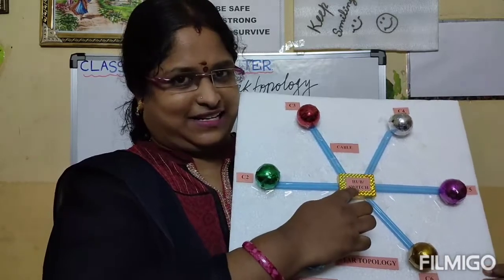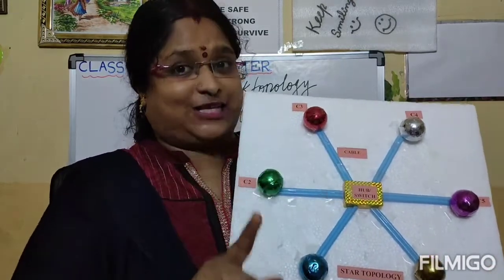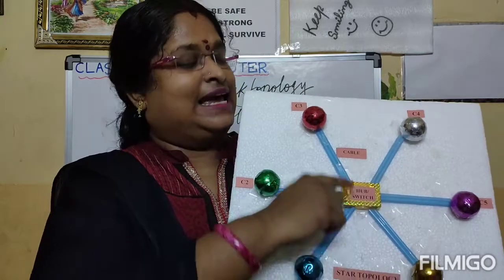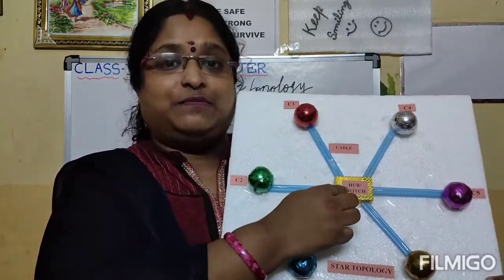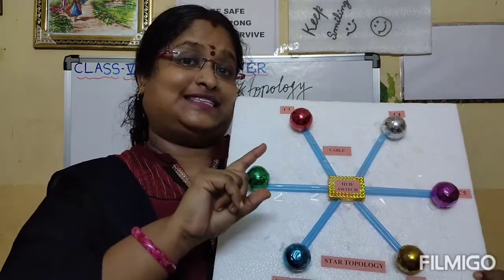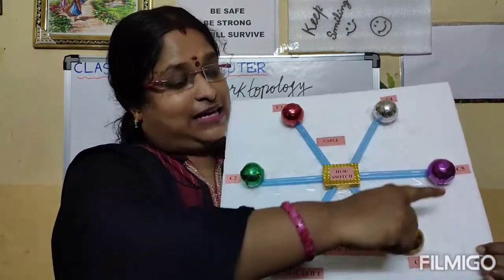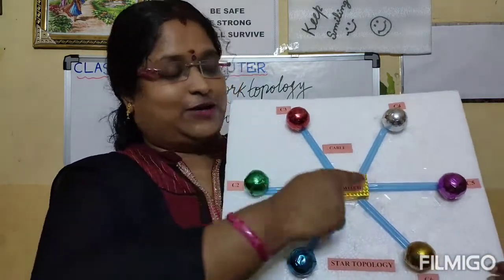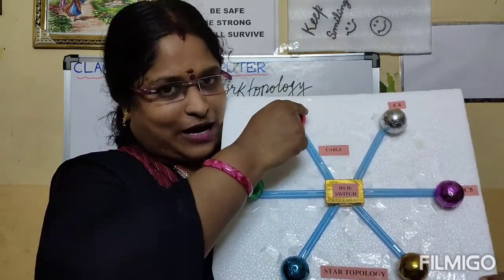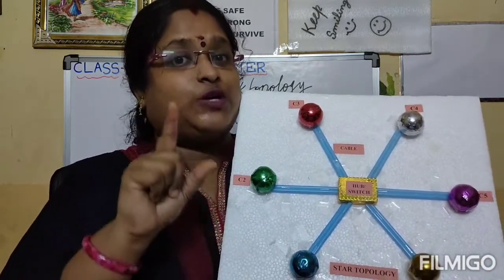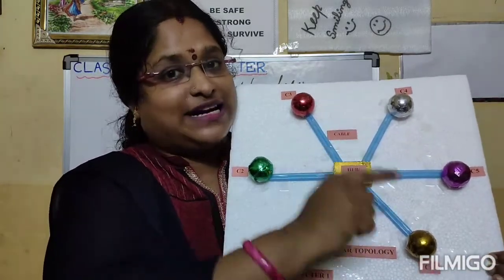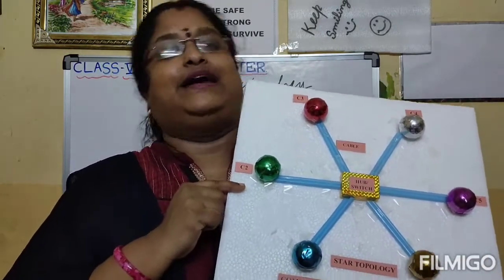If you are using a switch as a central controlling device, it does not do broadcasting. It receives the data packet from one PC and transmits it only to the requested PC. For example, if PC number 6 is requesting, it will transmit the data only to PC number 6. This is the difference between a hub and a switch.